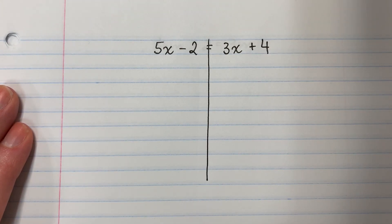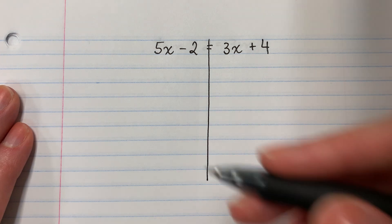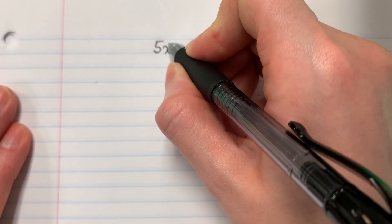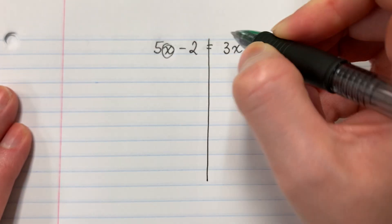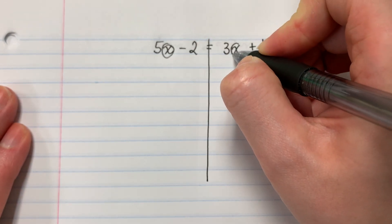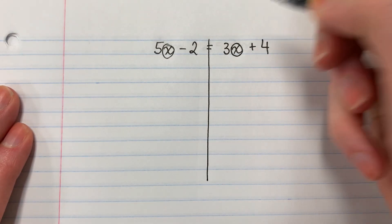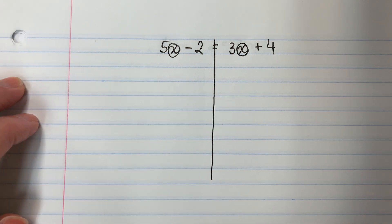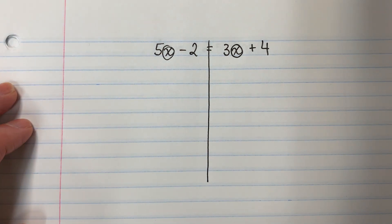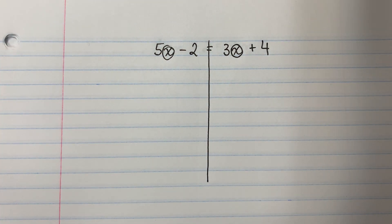So I have a problem. Tengo un problema. I have two x's — tengo dos x's — one on each side. Una en cada lado. So which one will I move? ¿Cuál voy a mover? Because I want to put them together. Porque quiero ponerlos juntos.